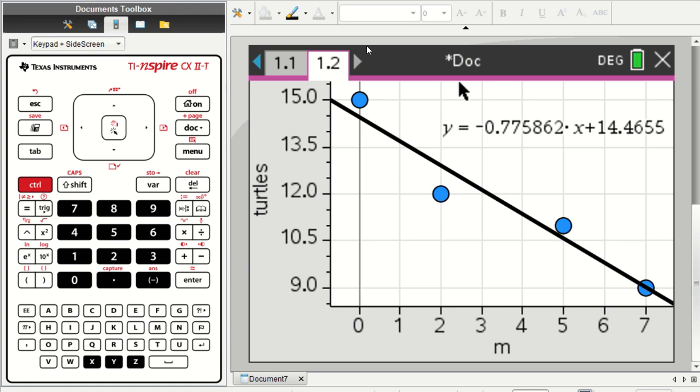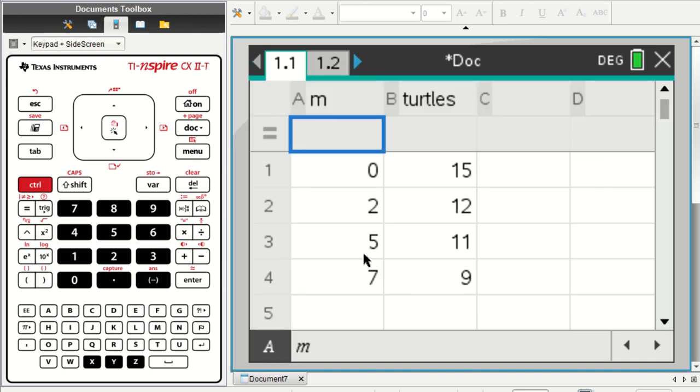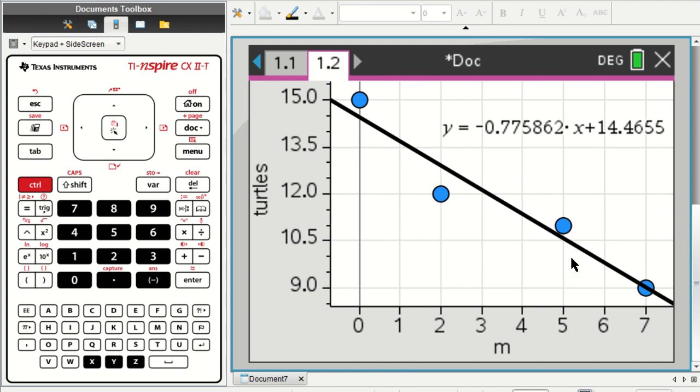This is part two of a couple of videos describing how to analyze bivariate data. So in the previous video, we entered the data into some lists, and then we created a graph.